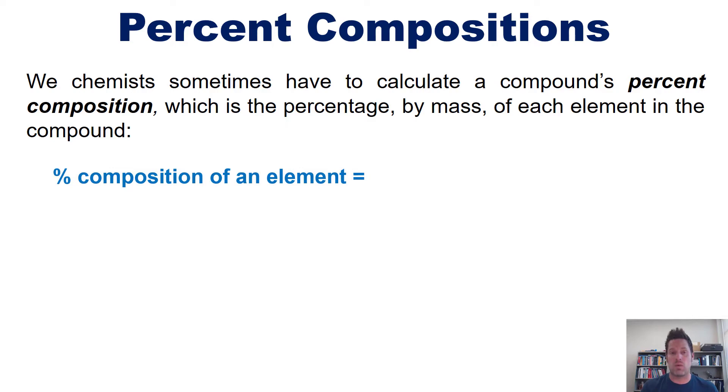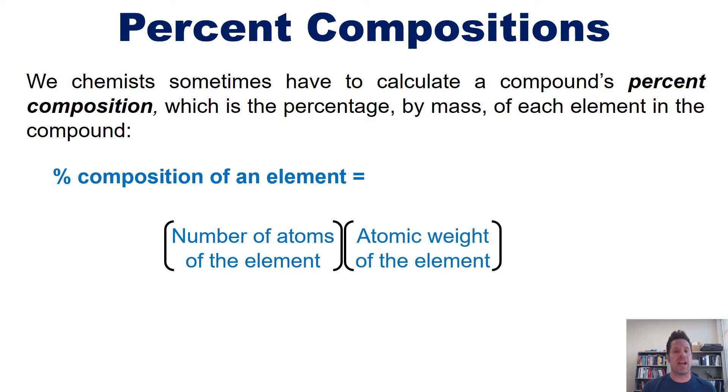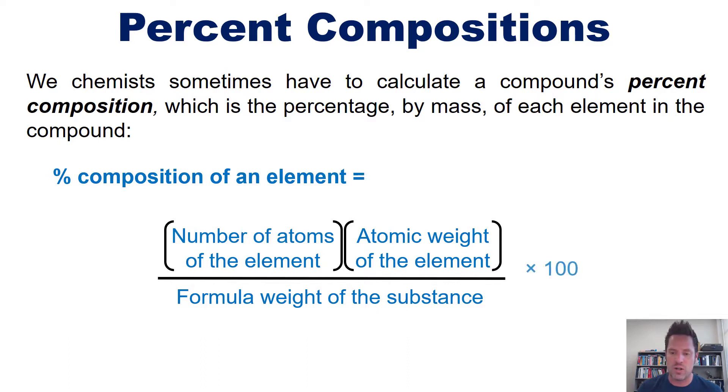Percent composition of any specific element within a compound is obtained by taking the number of atoms of that element, multiplying it by that element's atomic weight, and then dividing it by the total molecular weight of the substance. We discussed molecular or formula weights in an earlier video linked to in the description below. You then take that and times it by 100 to get a percent.